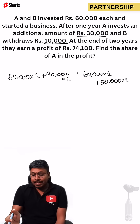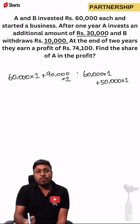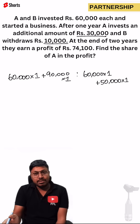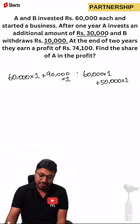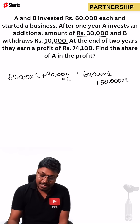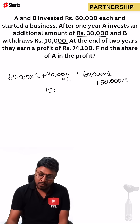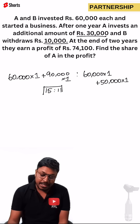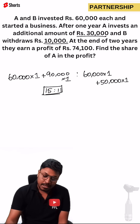A's total investment: 60,000 + 90,000 = 1,50,000. B's total investment: 60,000 + 50,000 = 1,10,000. Cancelling all zeros, the investment ratio of A to B is 15 : 11.